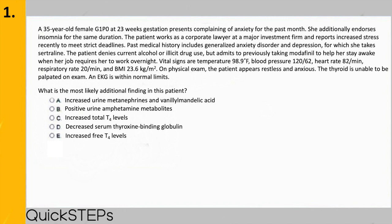A general rule of thumb for test taking is to take whatever the patient says as true — this eliminates choice B since she explicitly denies alcohol or illicit drug use. How about choice C — increased total T4 levels? During pregnancy there is an increase in total thyroxine binding globulin, which binds up free T4. This leads to a transient decrease in free T4, which stimulates the hypothalamus to produce more TRH, which makes the pituitary produce more TSH, which then increases free T4 levels back to normal via negative feedback.